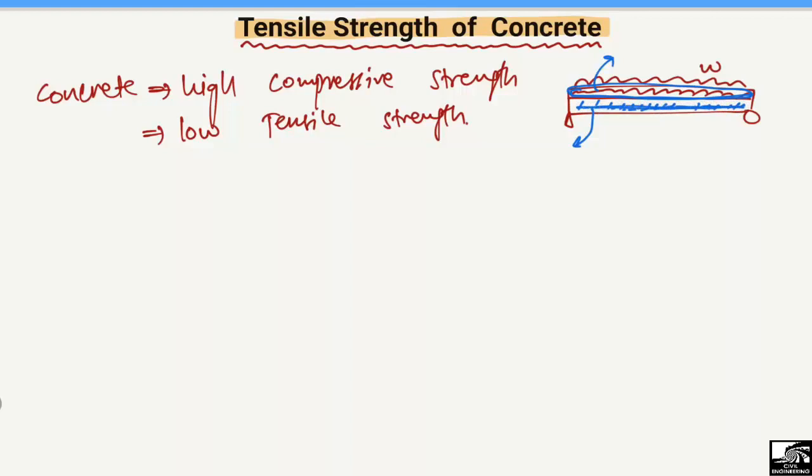Because the tensile stresses cannot be taken by the concrete, that's why we provide reinforcement throughout the length of the beam in order to take the tensile stresses. For this reason, due to the low tensile strength of concrete, we always provide reinforcement bars where we need to increase the tensile strength of the member. The main point is that concrete has high compressive strength but low tensile strength.